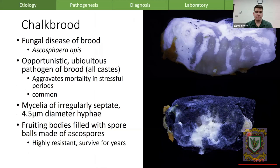Chalk brood is a fungal disease of the brood caused by Ascosphaera apis. It is an opportunistic and ubiquitous pathogen of brood that can infect all the castes. It aggravates mortality in already stressful periods, particularly periods when there are fewer nurse bees and an issue in keeping the colony warm.